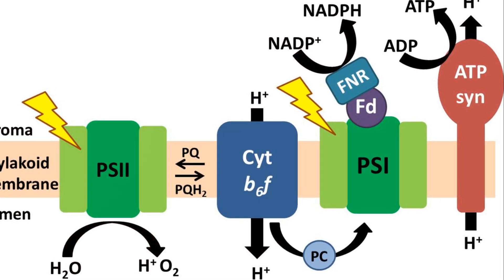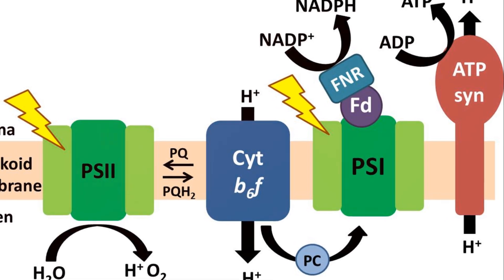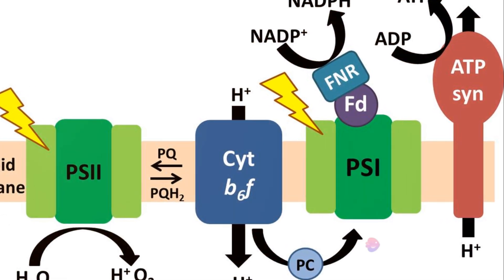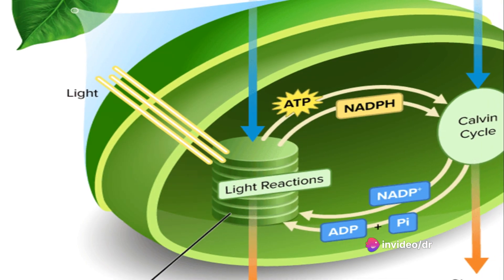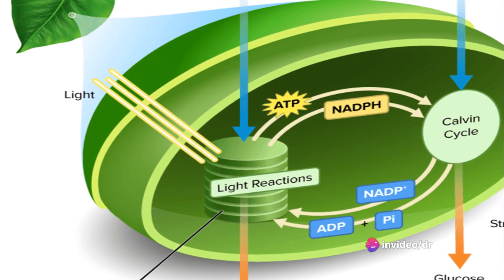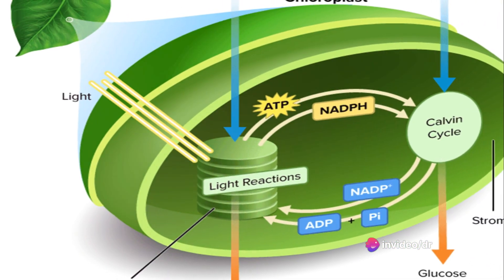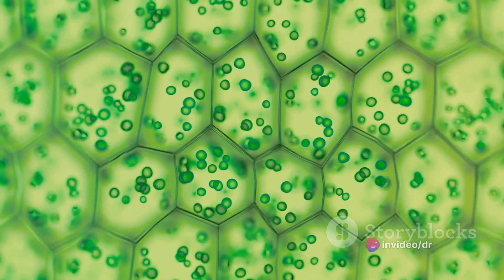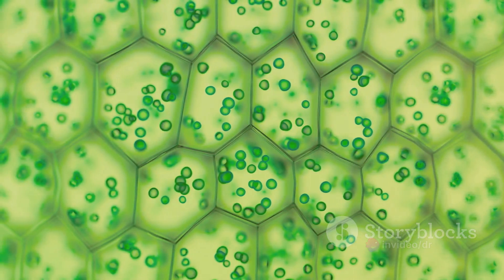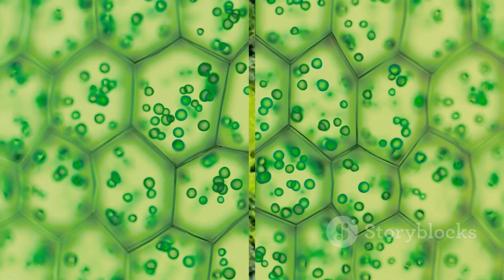As we have seen in the previous video, during the oxygenic process, light energy is converted into ATP and NADPH. The Calvin Cycle is the second phase of the photosynthetic reaction that uses ATP and NADPH to form glucose.